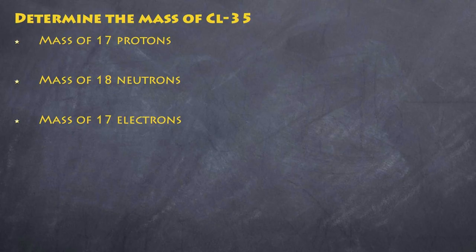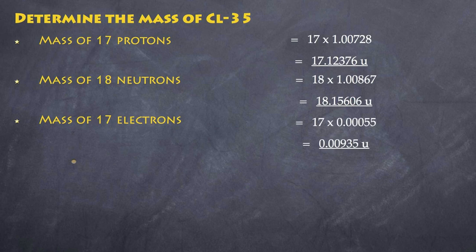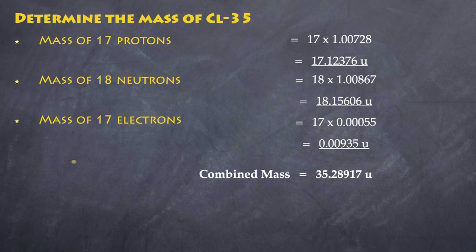With 17 protons I end up getting 17 by the AMU in terms of protons. I get this value 17.12376. Similarly I get the mass of neutrons equaling 18.15606 and then of course I have my mass of electrons as well. So this is the combined mass of my chlorine atom. If I add all those up and if I do the mathematics I get 35.28917. That seems fine.